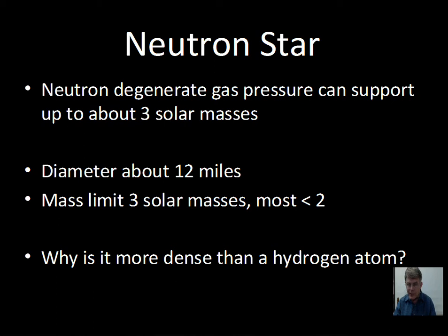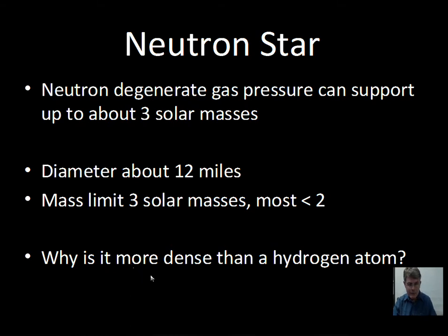The reason a neutron star is denser than a complete hydrogen atom is that electrons are spaced widely away from the nucleus — there's mostly empty space between the nucleus and where the electrons orbit. So the atoms that make up your body, and those in our Sun's outer layers, are mostly empty space. Neutron star material is much more dense because it is nuclear-type material — just the nucleus of the atom. Neutron stars do not have electrons; they just have the neutrons.